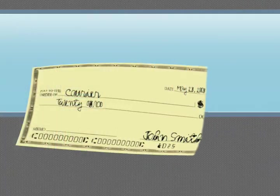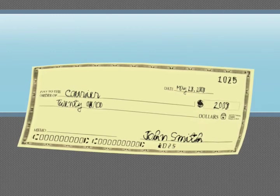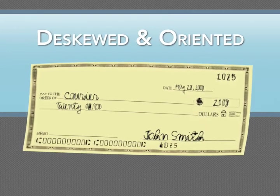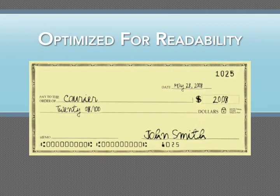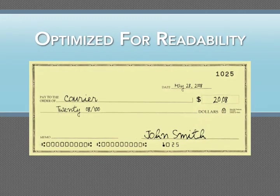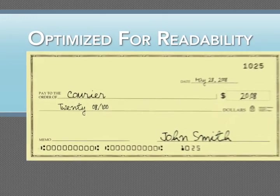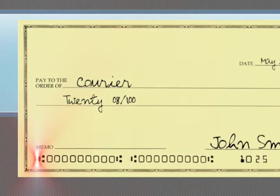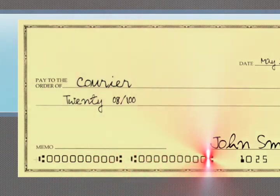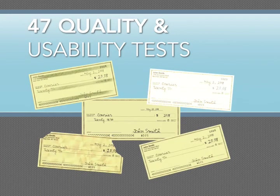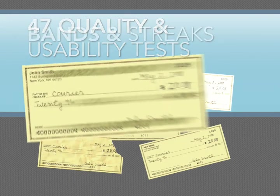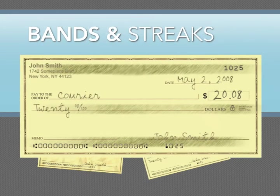First, the image is prepared for examination. It is de-skewed and oriented for standard micro-placement. The image is optimized for maximum readability, including optical character recognition, to boost the micro-read.